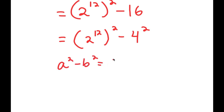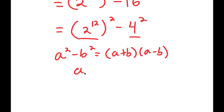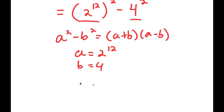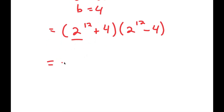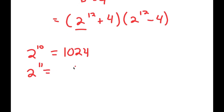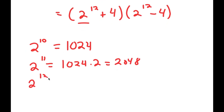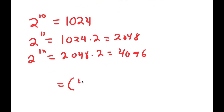Now, using the difference of squares property — a squared minus b squared equals a plus b times a minus b — we have 2 to the power of 12 squared minus 4 squared, where a is 2 to the power of 12 and b is 4. So I get 2 to the power of 12 plus 4, times 2 to the power of 12 minus 4. Since 2 to the power of 10 is 1024, 2 to the power of 11 is 2048, and 2 to the power of 12 is 4096. So I get 4096 plus 4, times 4096 minus 4.